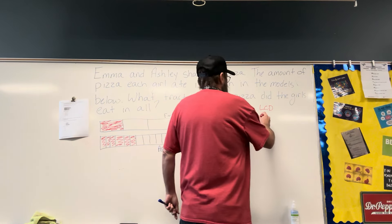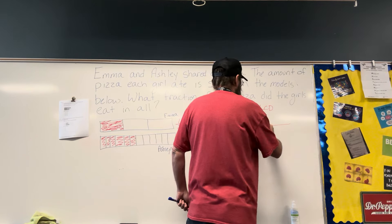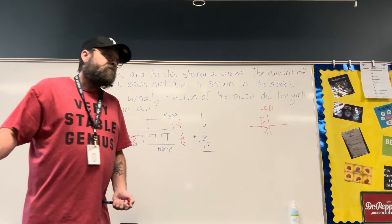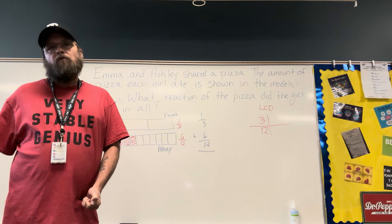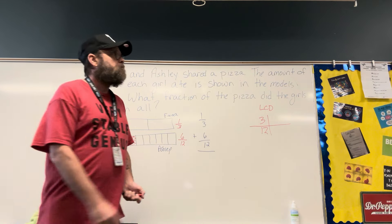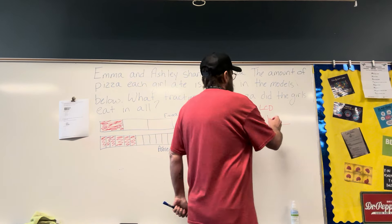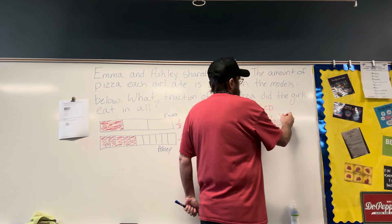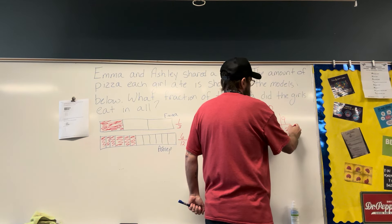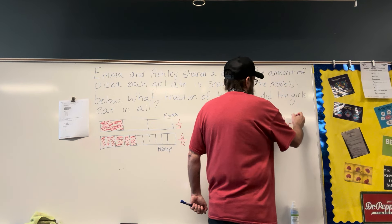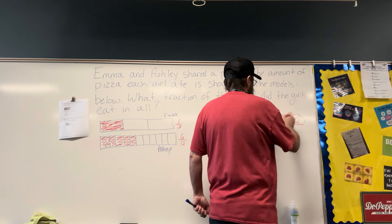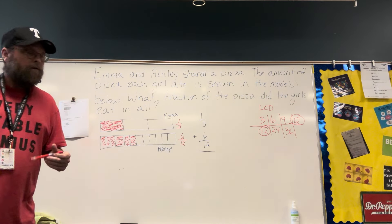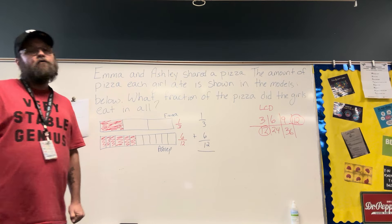So I take both denominators, 3 and 12, and I just start listing the multiples. If you have a multiplication chart, it'll make your life much easier for this. We have 6, 24, 9, 36, and 12. 12 is the smallest multiple of both 3 and 12.